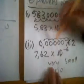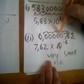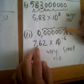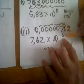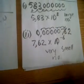With a small number, no comma... 7.6. You're going to move it to your right: 1, 2, 3, 4, 5, 6—6 places to the right. 7.62 times 10 to the power minus 6, for very small numbers.